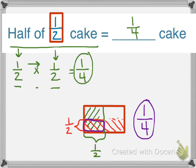And if you look, one fourth, so half of a half a cake equals one fourth, and it matches our numbers from before.